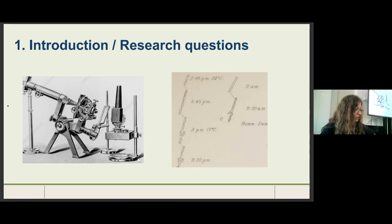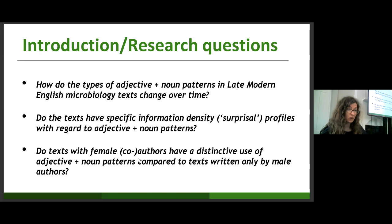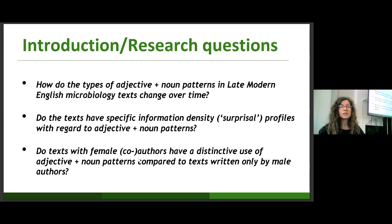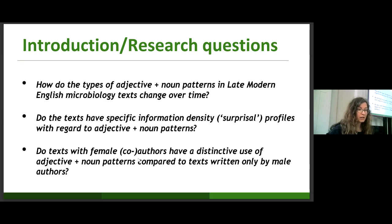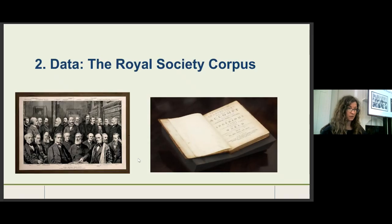The research questions I would like to address are: How do the types of adjective plus noun patterns in late modern English microbiology texts change over time? Do the texts have specific information density — that is, specific profiles with regard to adjective plus noun patterns? And do texts with female authors or co-authors have a distinctive use of adjective plus noun patterns compared to texts written only by male authors?